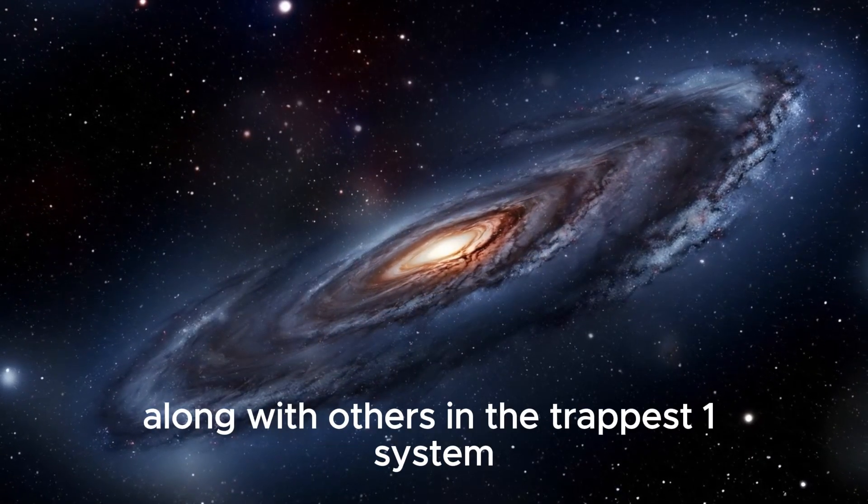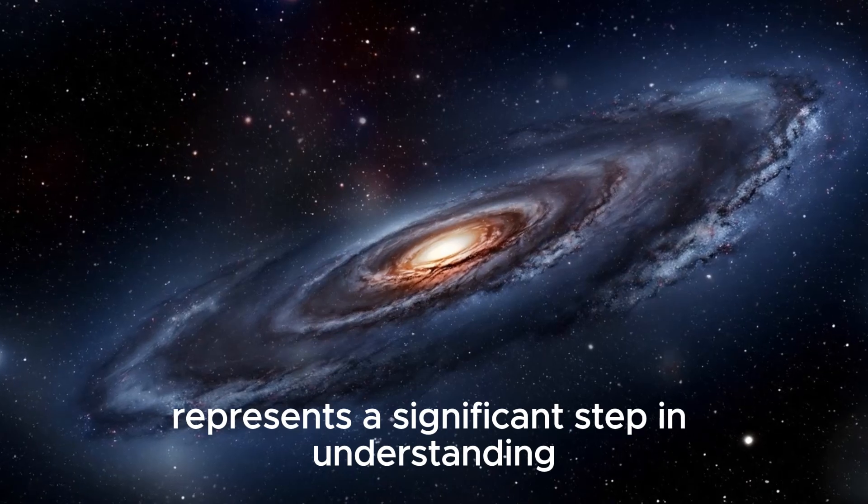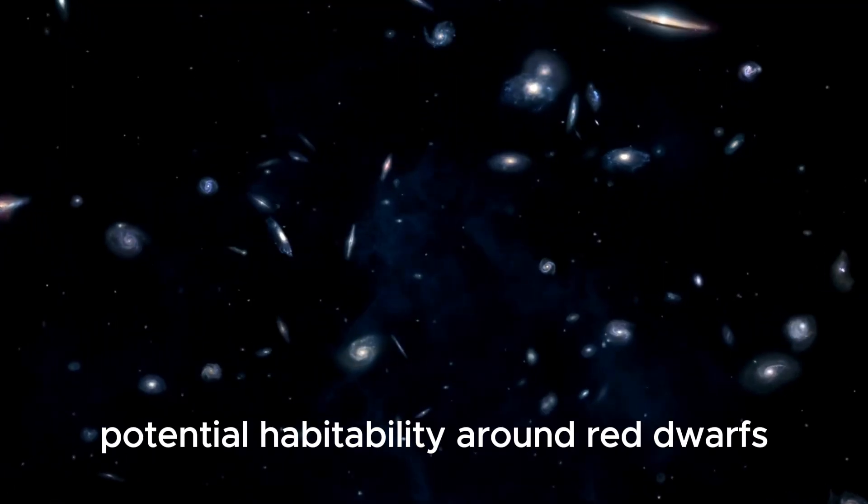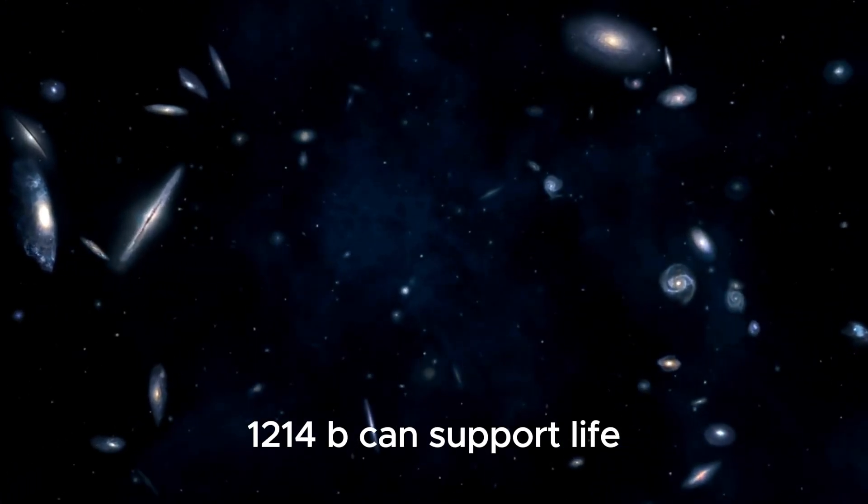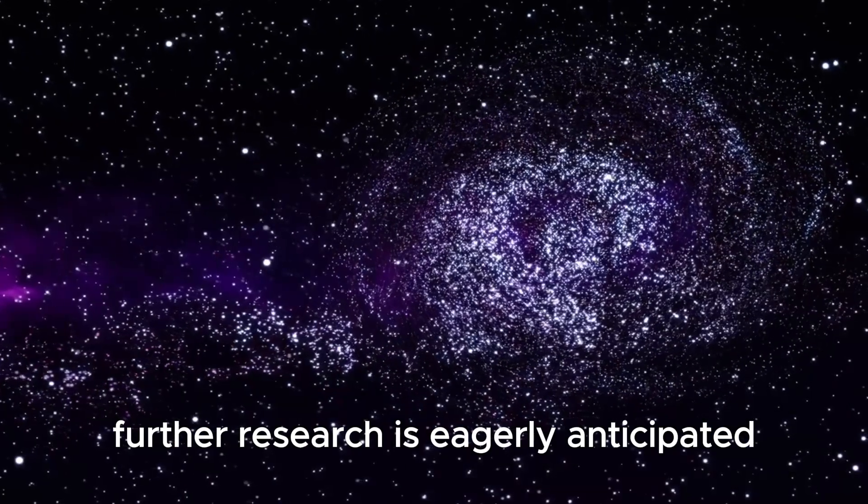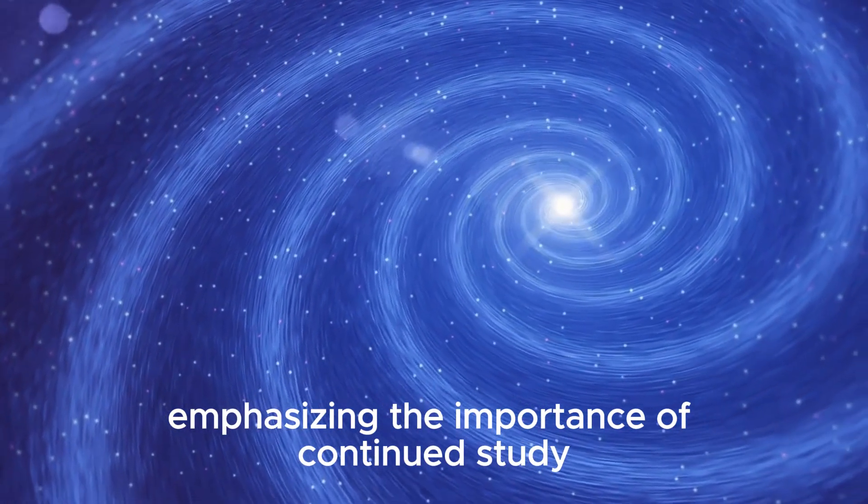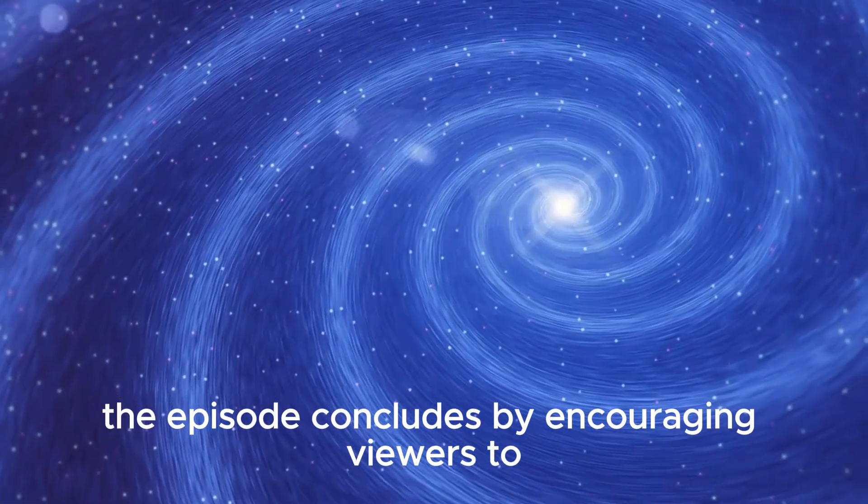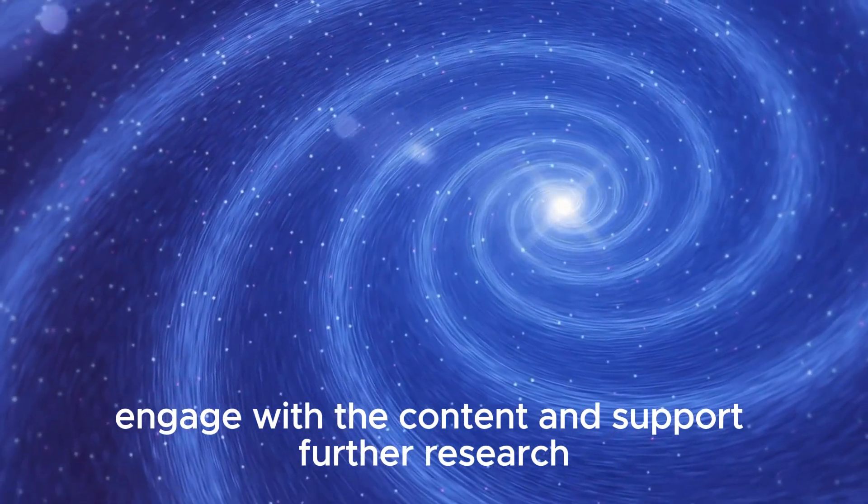This exoplanet, along with others in the TRAPPIST-1 system, represents a significant step in understanding potential habitability around red dwarfs. While it's too early to determine if GJ 1214b can support life, further research is eagerly anticipated. Kelowna remains hopeful, emphasizing the importance of continued study. The episode concludes by encouraging viewers to engage with the content and support further research.